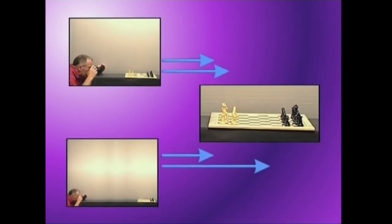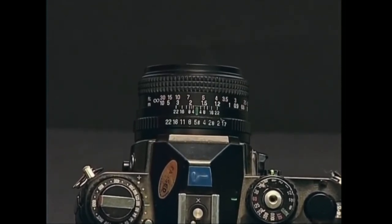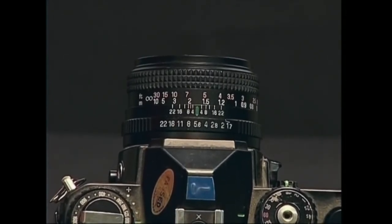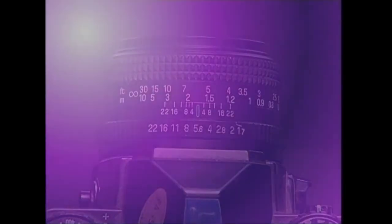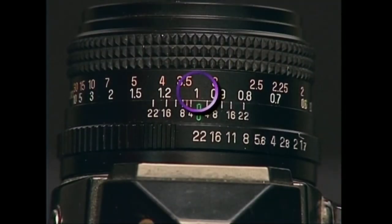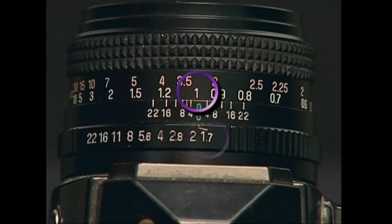Eta subjektuaren gandik zenbat eta urrunago jartzen garen, sakontasuna areagotu egingo dugu. Objektibo gehienek ikus eremuaren sakontasunaren neurria adierazteko mailaketa bat izaten dute. Mailaketak, F zenbakiak medio, fokatu dugun guneari dagokion ikus eremuaren sakontasunaren aurrealdeko eta atzealdeko neurriak adierazten ditu. Subjektu fokatu dugun gunea ehun zentimetrora badago eta diafragmaren irekiera F22 bada, ikus eremuaren sakontasuna larogei eta bost eta ehun eta hogeita hiru zentimetroren bitartean edatuko da. Aldiz, diafragmaren irekiera F1.7 bada, ikus eremuaren sakontasuna fokaturiko gunetik aurrera eta atzera zentimetro gutxi batzuren tartean edatuko da.